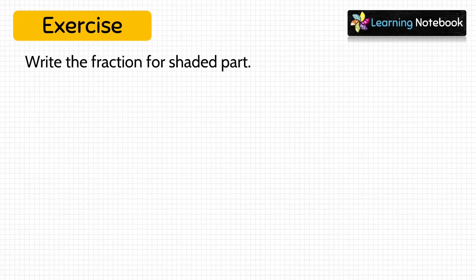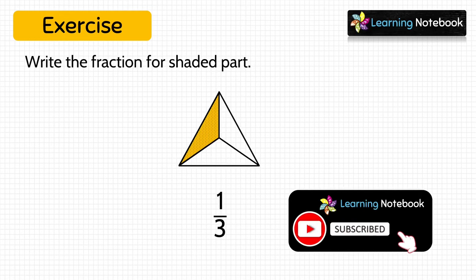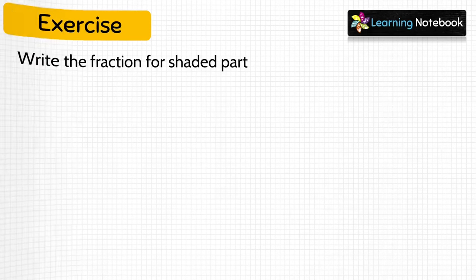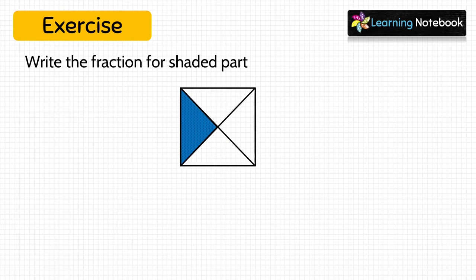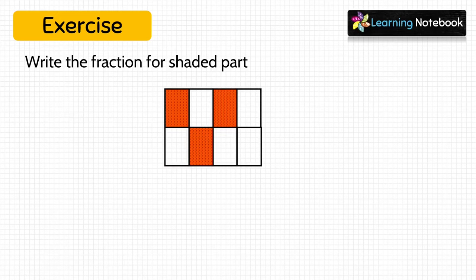Now let's do some related exercises — write the fraction for the shaded part. Look at this triangle: it is divided into 3 equal parts, so denominator is 3, and the shaded part is 1, so numerator is 1. Therefore the fraction for the shaded part is 1 by 3. The next figure is divided into 4 equal parts with 1 shaded, so the fraction is 1 by 4. The next figure is divided into 8 equal parts with 3 shaded, so the fraction is 3 by 8.